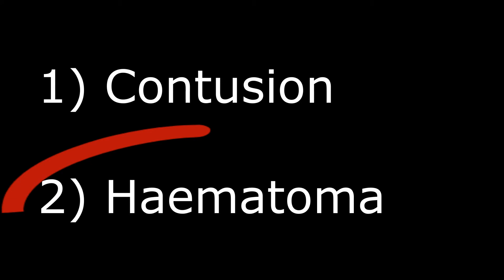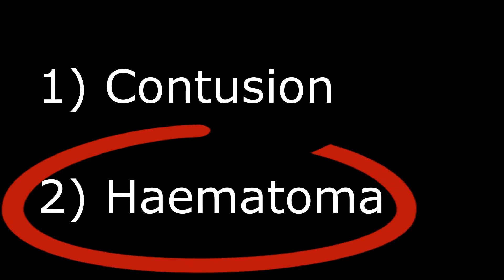Then you have hematoma. A hematoma is a blood clot that results after bleeding. You have three different types: epidural, subdural, and intracerebral.